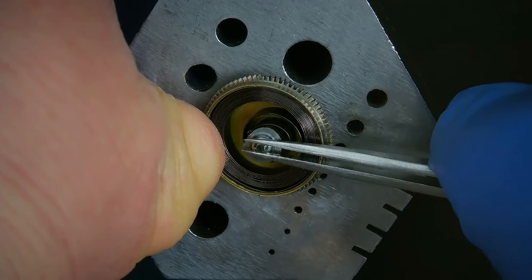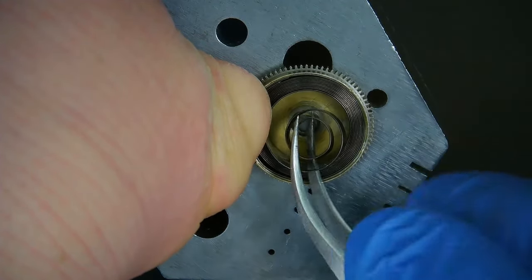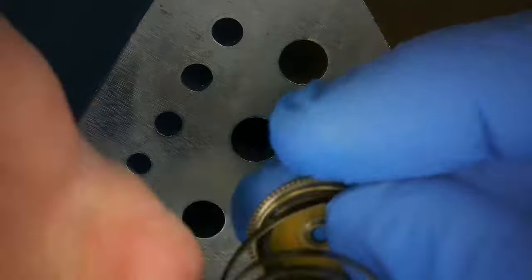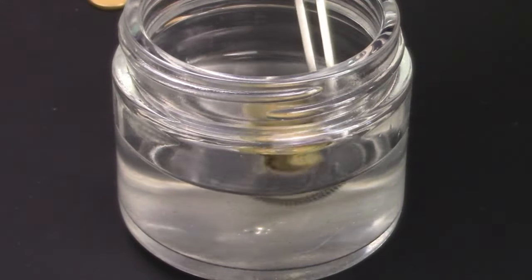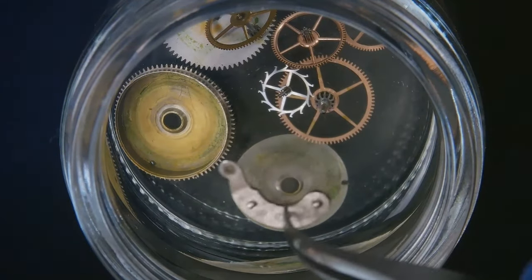Now let's remove the barrel arbor. And we'll remove the mainspring by unwinding it by hand. Now, so many indications of oil.